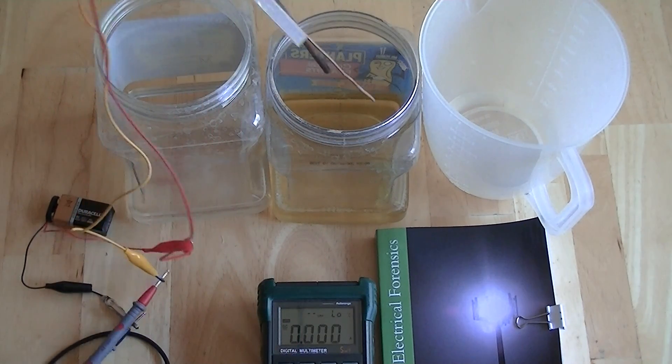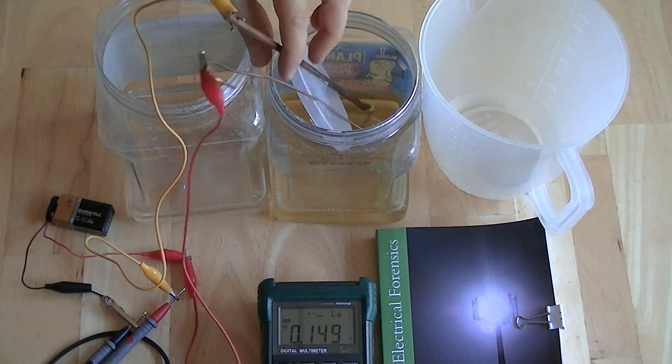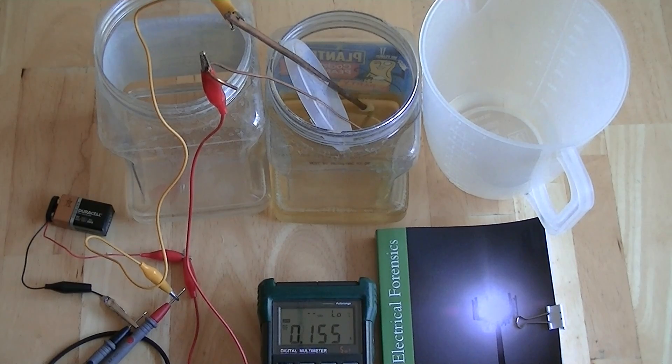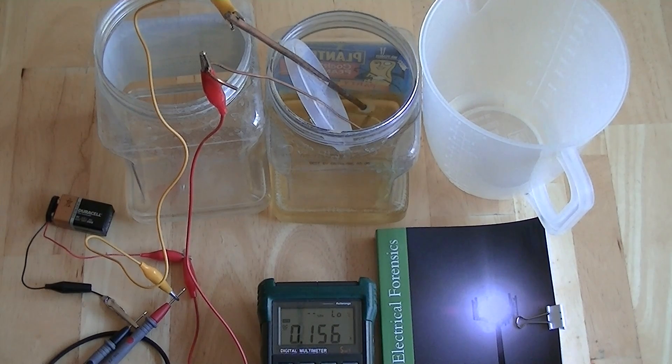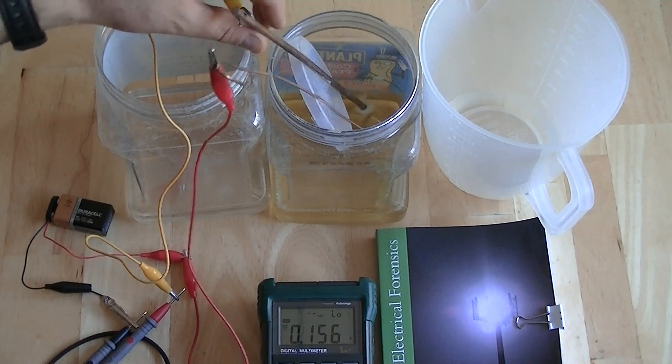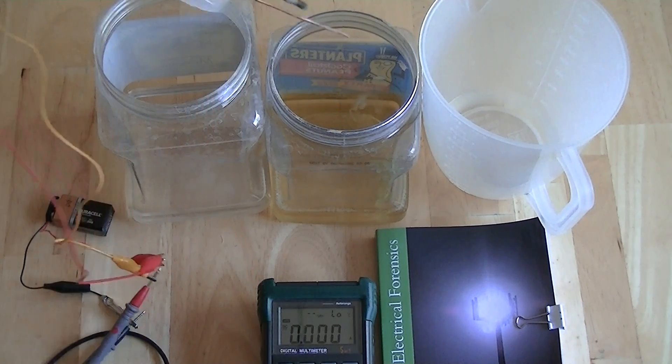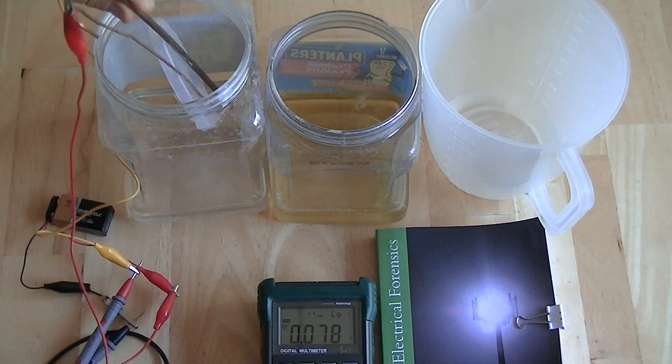So we're going to go on to the urine. You can see urine is far more conductive—we have 0.156 amps flowing through the urine. So let's go on to saltwater brine. Saltwater brine is very conductive and you can see that we actually have 0.298 amps flowing through the brine.